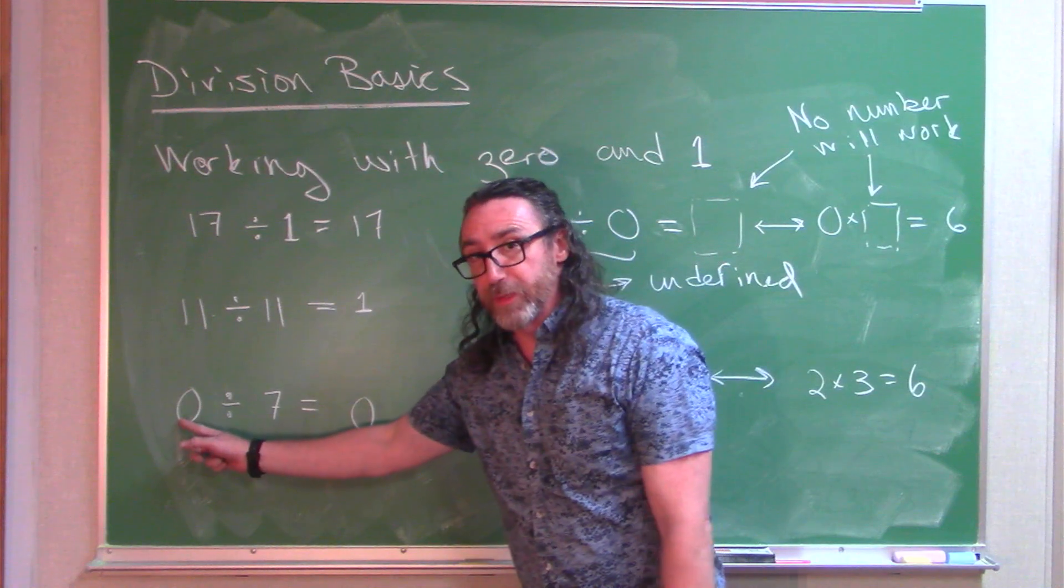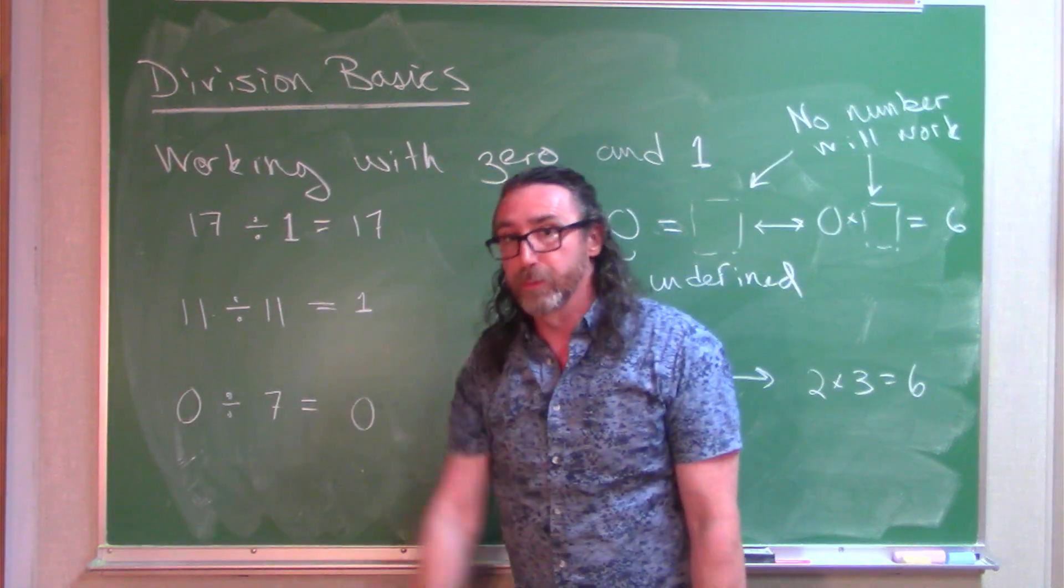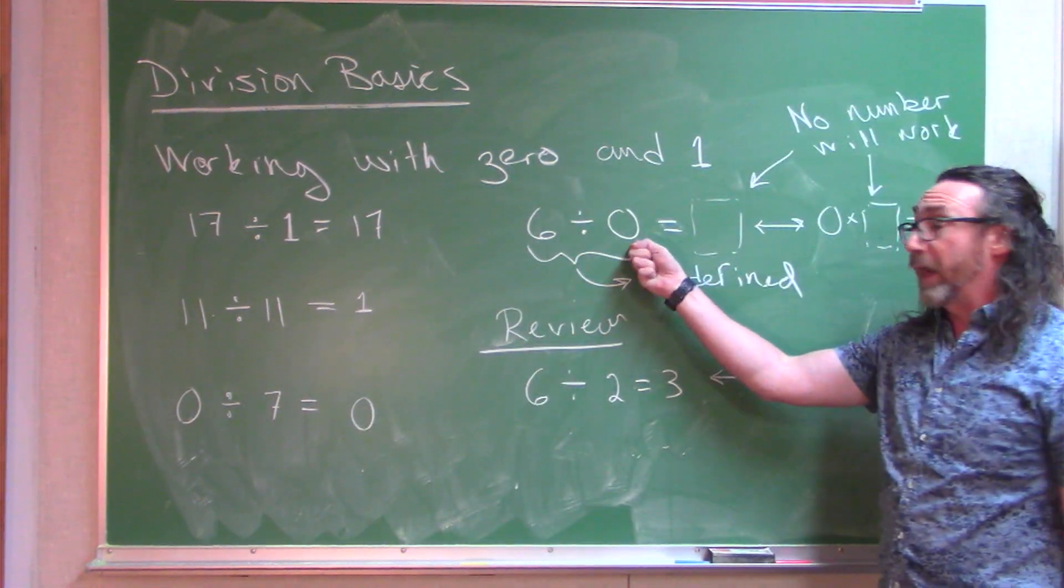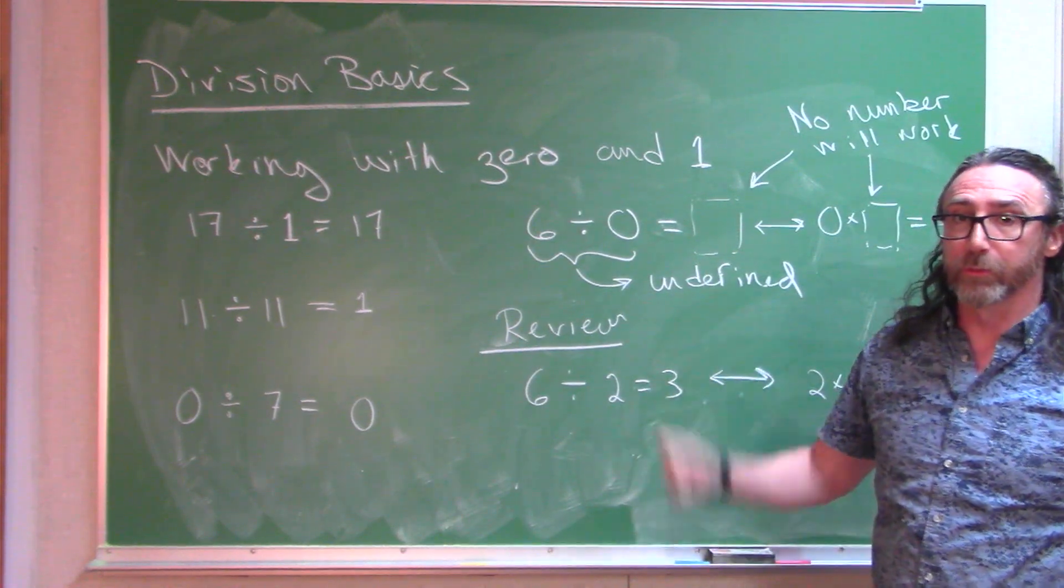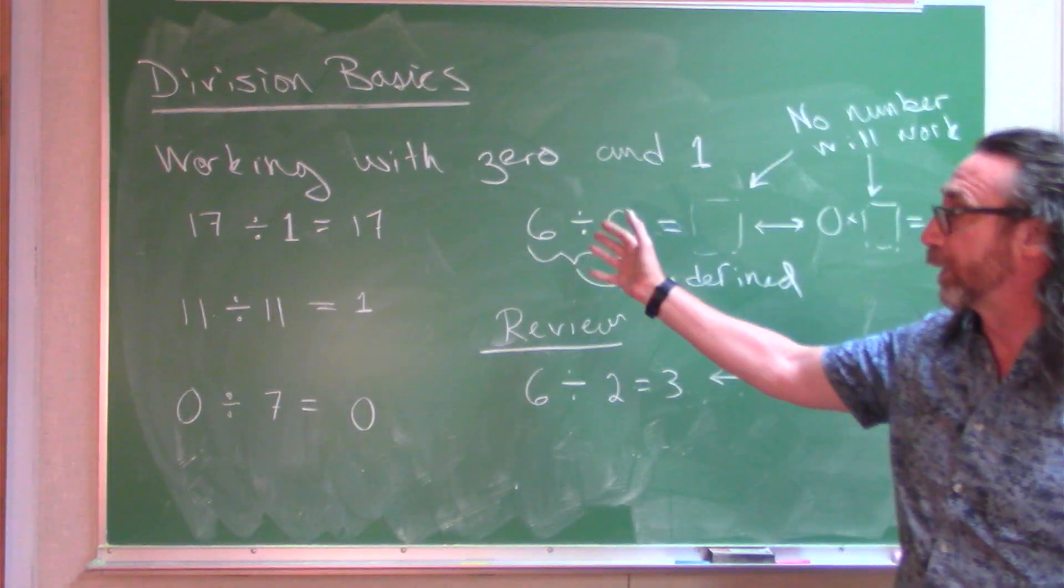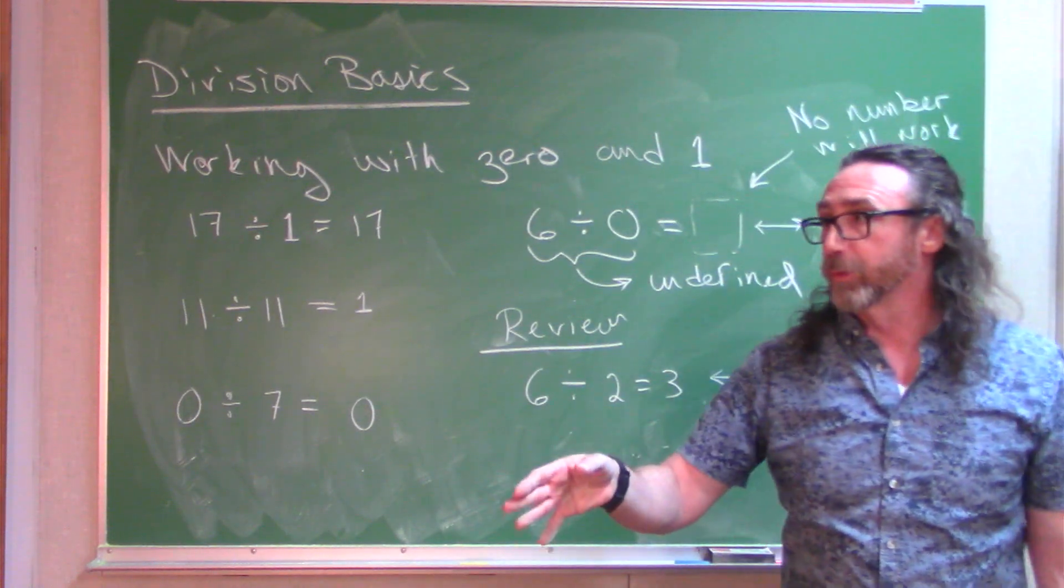So 0 as your dividend, you're good. 0 as your divisor, uh-uh. Undefined. So just some peculiarities of working with 0 and 1 in division.